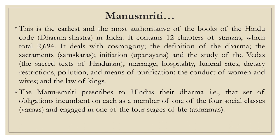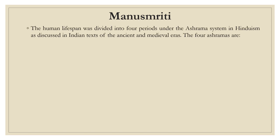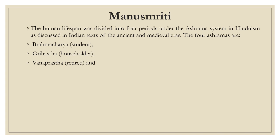Manusmriti prescribed to Hindus their dharma. It is said that there are a set of obligations incumbent on each as a member of one of the four social classes, called varnas, and engaged in one of the four stages of life called ashrams. The four ashrams are brahmacharya (when the person is a student), grihastha (when he becomes a householder after marriage), vanaprastha (the stage of retirement), and sanyas (the renunciation stage). During this period, the varna system became quite strong. The Hindu literature classified society into four varnas: Brahmin (priests, scholars and teachers), Kshatriya (rulers, warriors and administrators), Vaishya (agriculturists and traders), and Shudra (laborers and service providers).